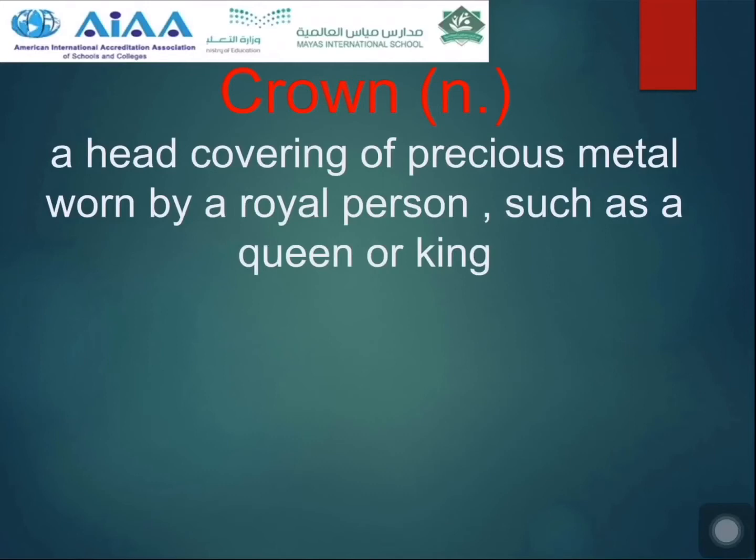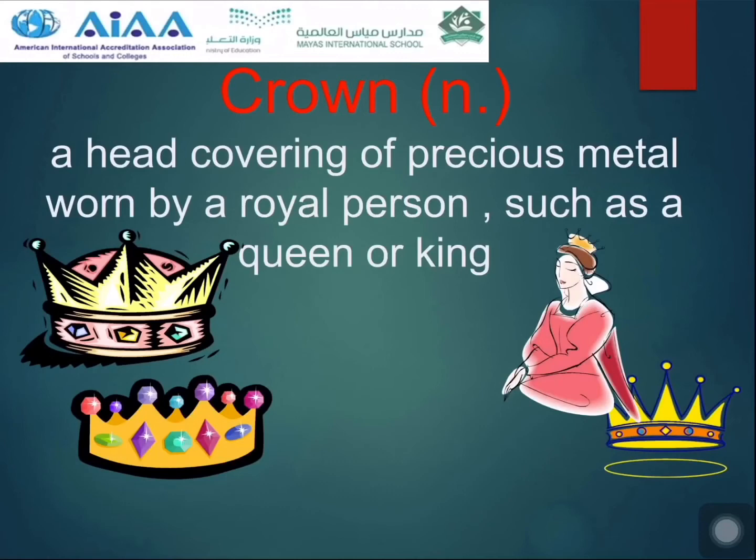Crown — what is a crown? It's a head covering of precious metal worn by a royal person, such as a queen or king. For example: the queen placed the gold crown on her head.